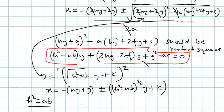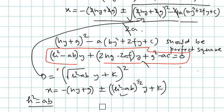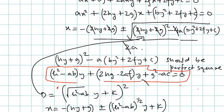The condition for parallel lines is that h² should equal ab, so that the y term vanishes. If there is a y term, the coefficient of y from the two factors would be minus h plus or minus root of (h² minus ab), giving two different slopes. For a unique slope, the discriminant must be zero, so h² equal to ab is the condition that the equation represents parallel lines.